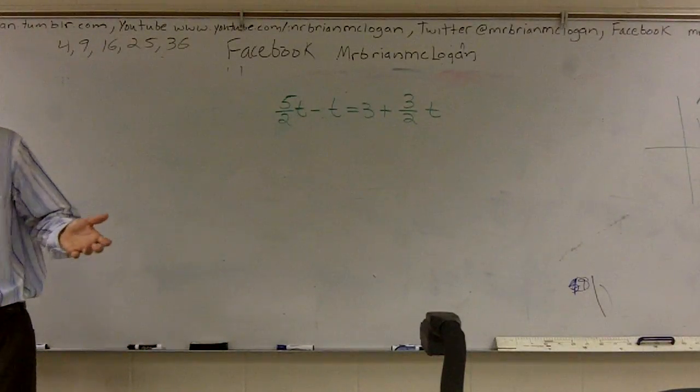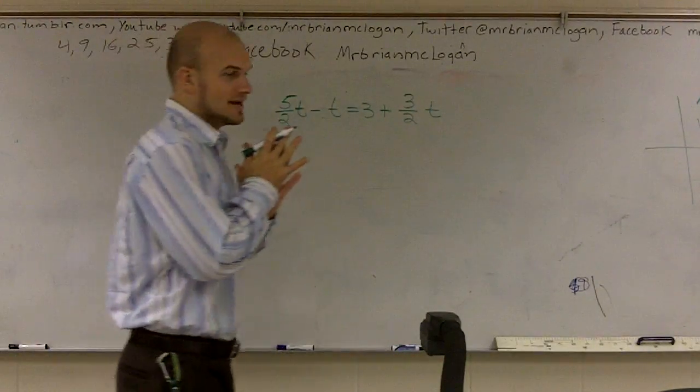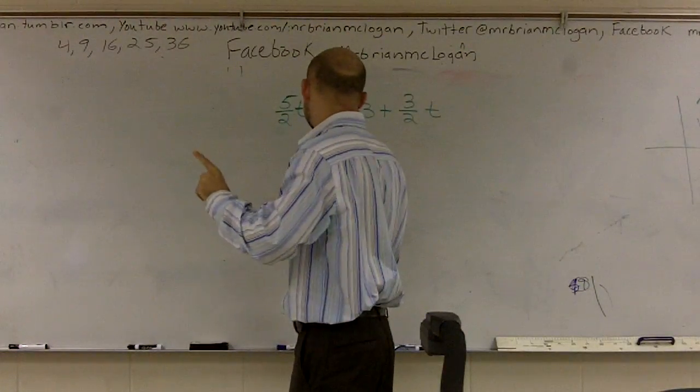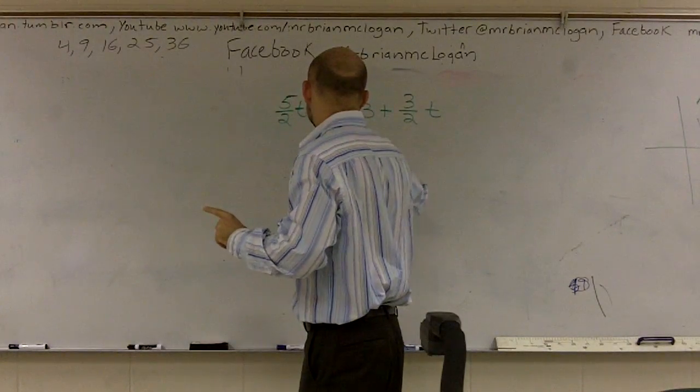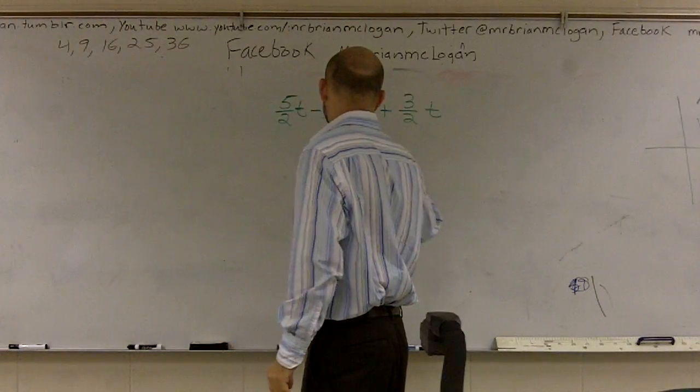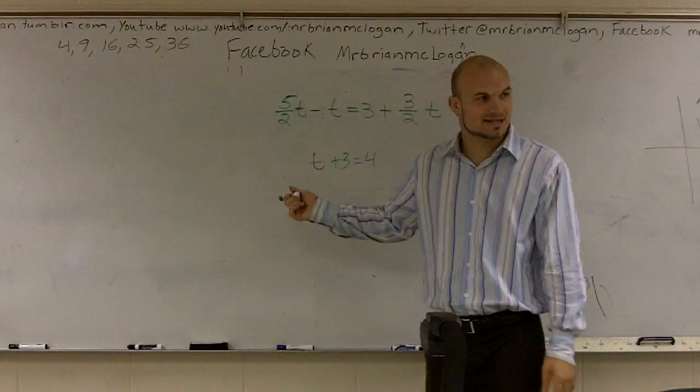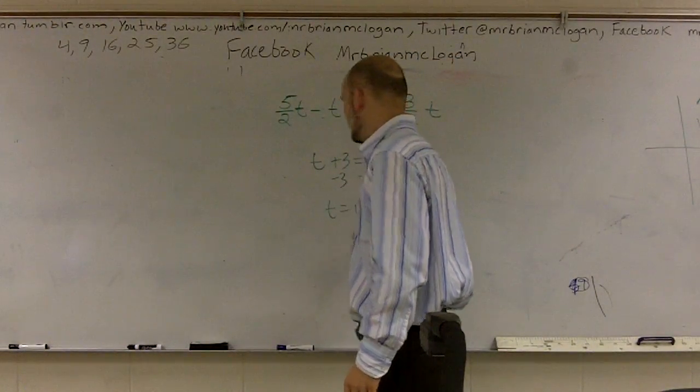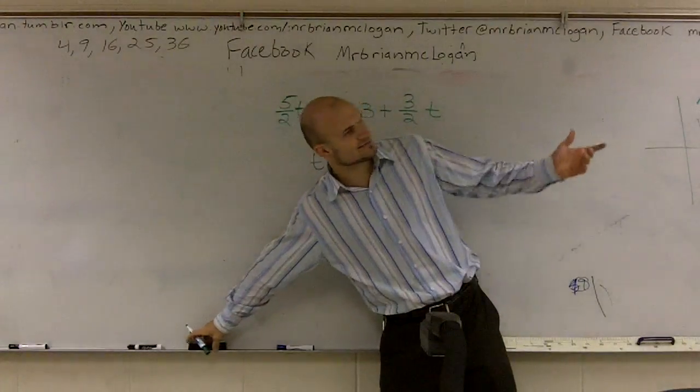Now, when solving for t on this problem, we have a big issue because we don't have one t. It's very easy when we had something like this: t plus 3 equals 4. Well, we only had one t to solve for, so we subtracted the 3 and we got t equals 1. And we were good, right? It was easy.